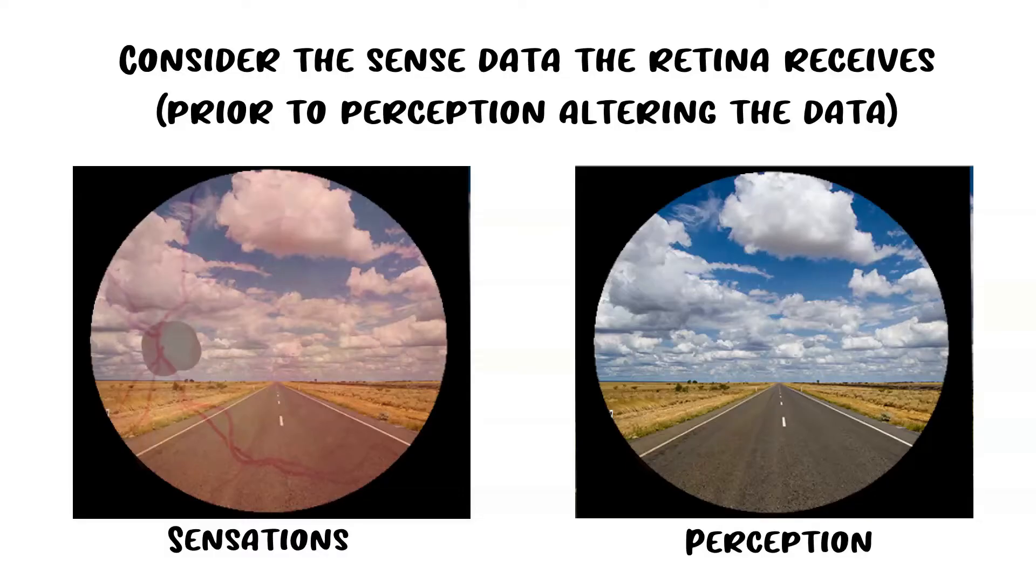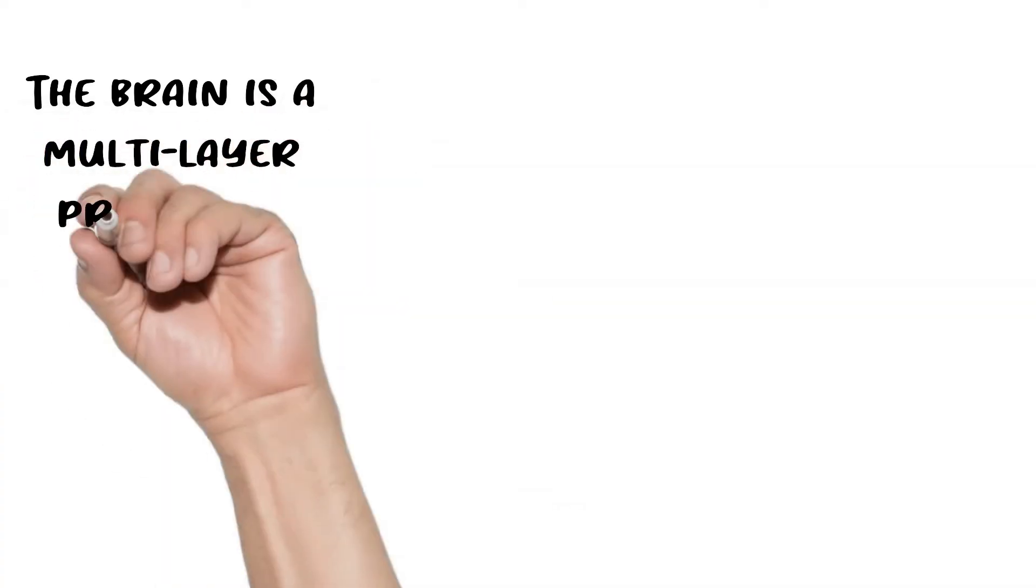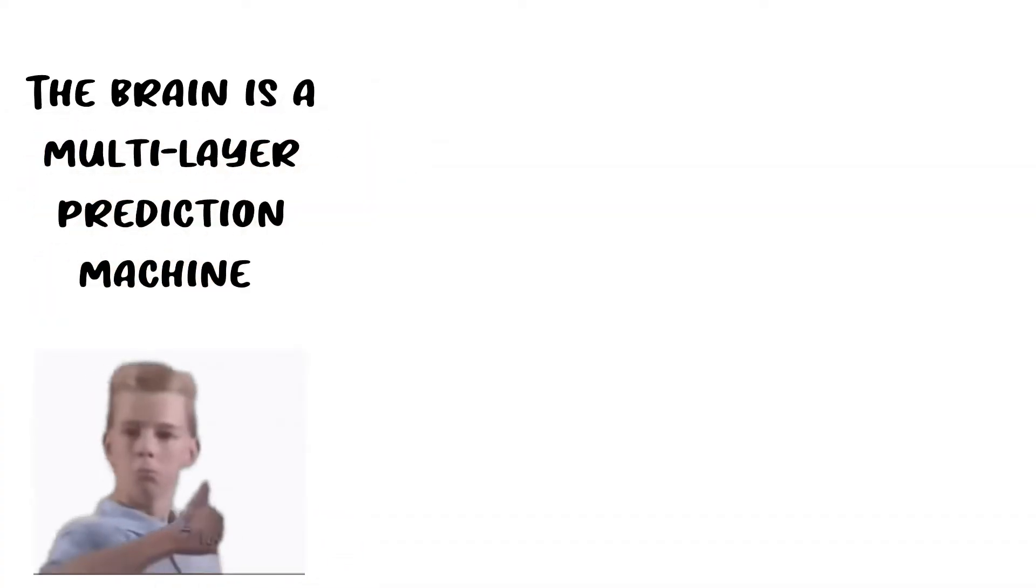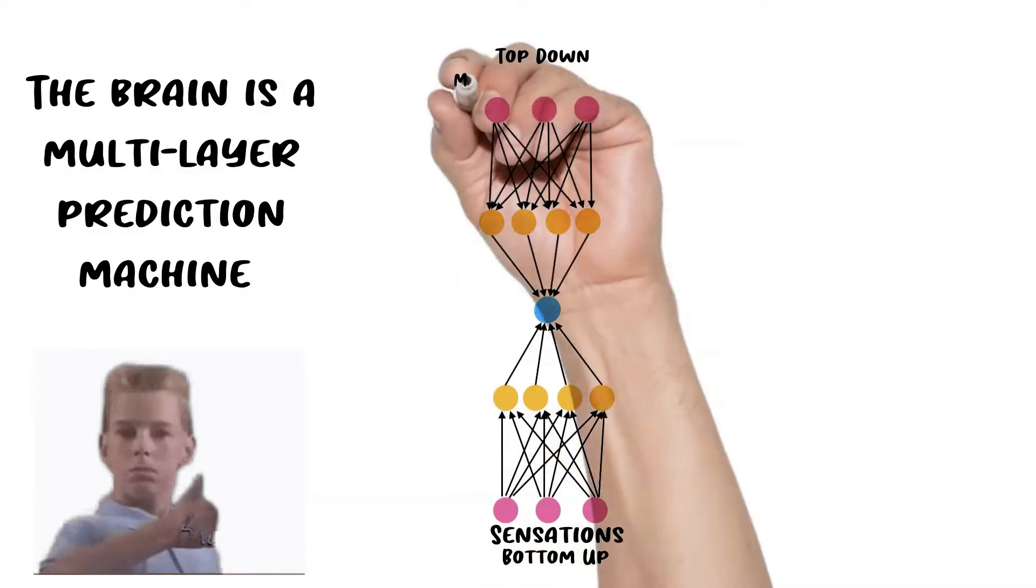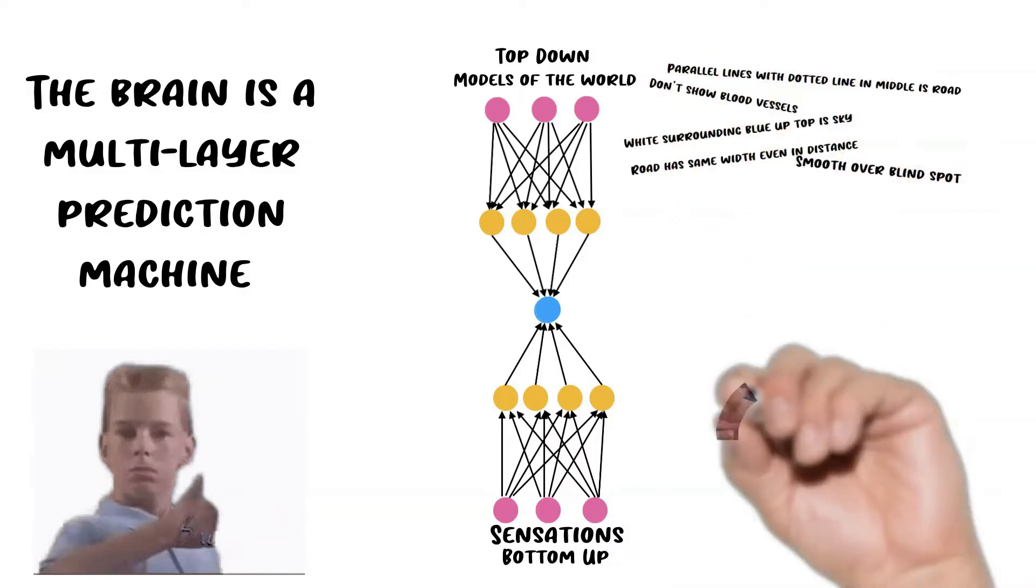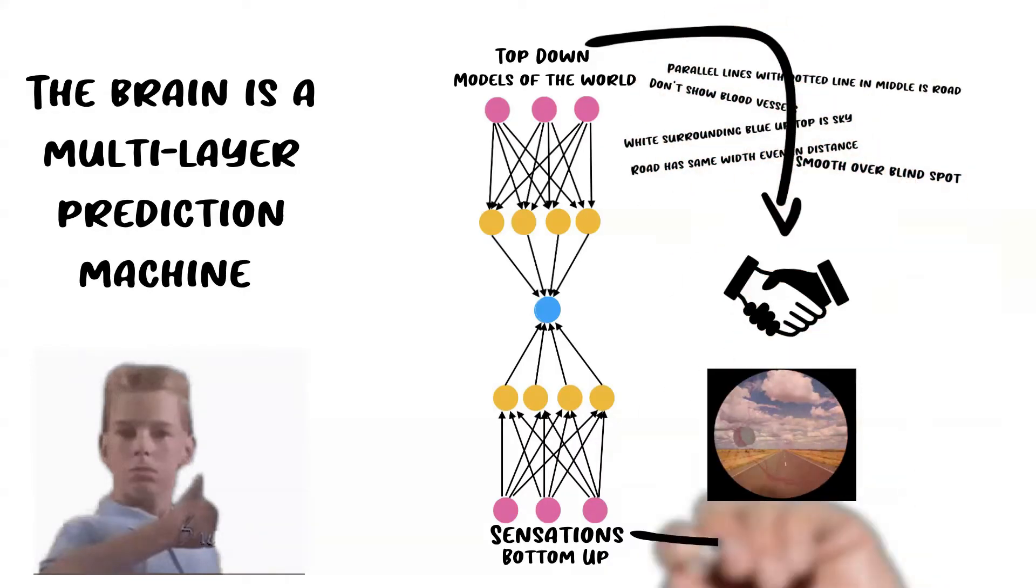The key insight to understand this is that the brain is a multi-layer prediction machine. Neural processing consists of two streams: the top-down stream and the bottom-up stream. The top-down stream is the stream of predictions based on our models of the world. Our reality—the world—is a handshake between our top-down models of the world and the bottom-up sensations.